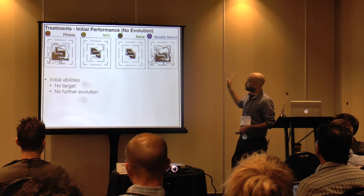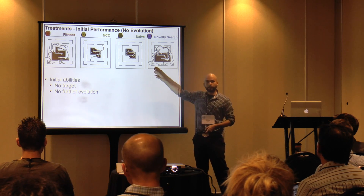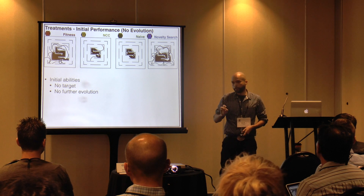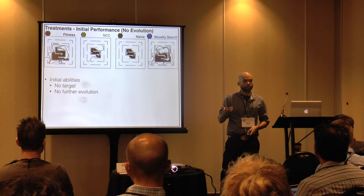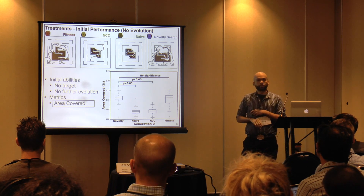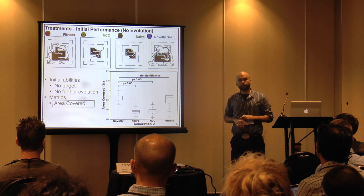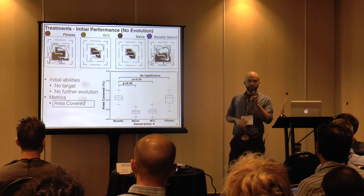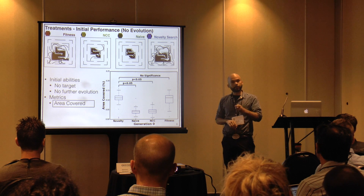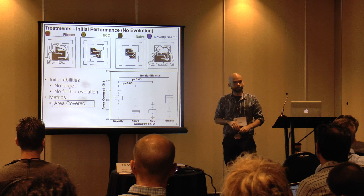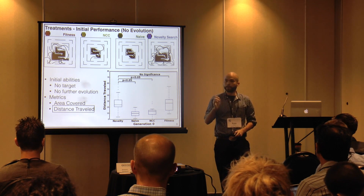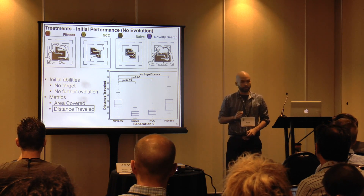We look at initial abilities: we transfer the treatments into the large maze with no further evolution and no target, to see their initial skill. For area covered, Knowledge Research covers significantly more area than Naive and NCC — our two random controls — at a significance level of 0.05. More interestingly, when we compare Knowledge Research to Fitness, there is no significant difference. Knowledge Research, criticized as a random search, is performing just as well as the traditional objective-based EA. We see the same trend for distance traveled: Knowledge Research travels further than the random controls and is equivalent to Fitness.